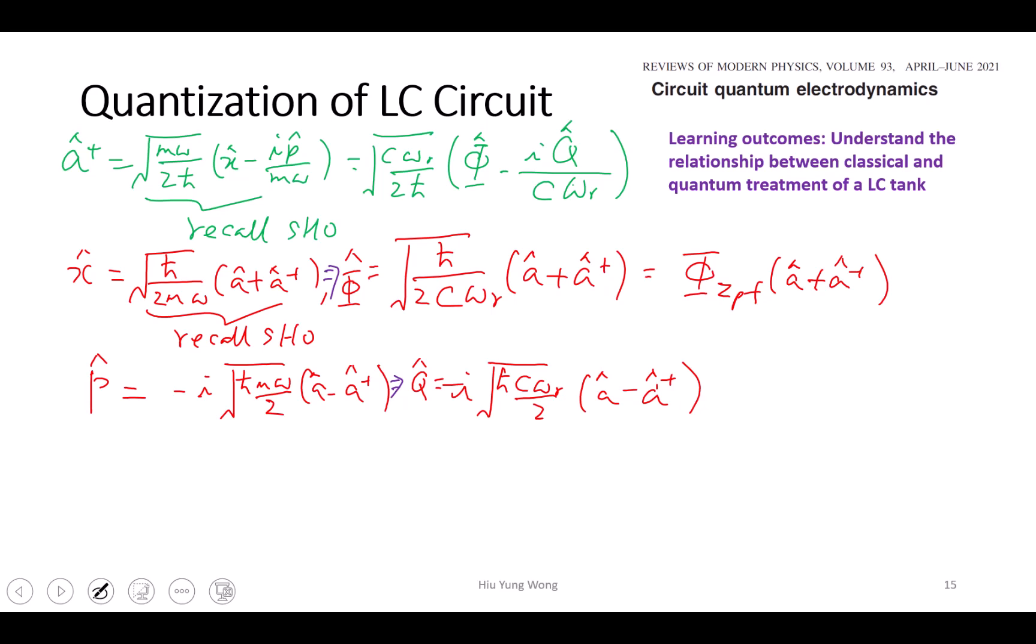Let me use one more minute to just write down this zero point fluctuation. This equals to Q zero point fluctuation a plus a dagger. You just plug in.